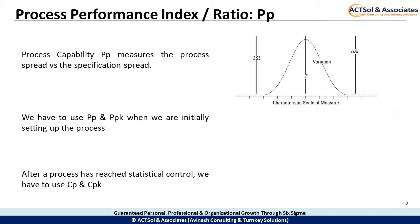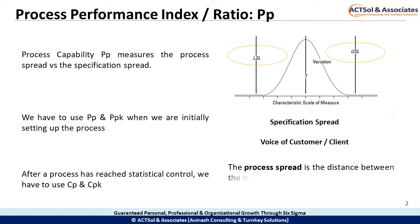Let's imagine that your process has two specifications: a lower specification limit, which is the lowest value allowed, and an upper specification limit, the highest value allowed. The difference between the two is the specification spread, sometimes referred to as the voice of the customer or client. The process spread is the distance between the highest value generated and the lowest, sometimes referred to as the voice of the process.